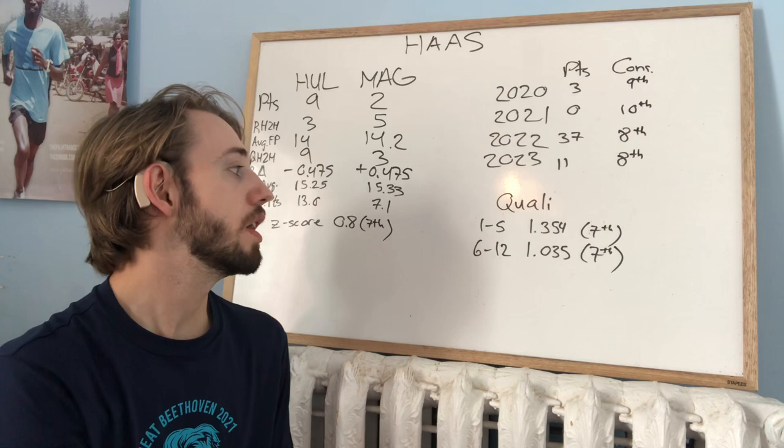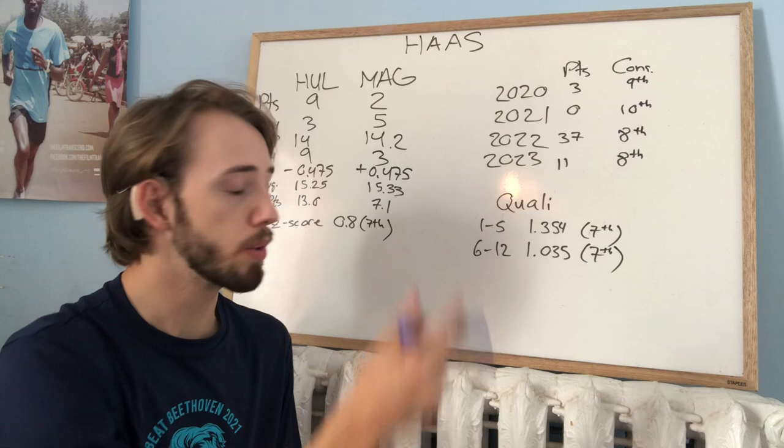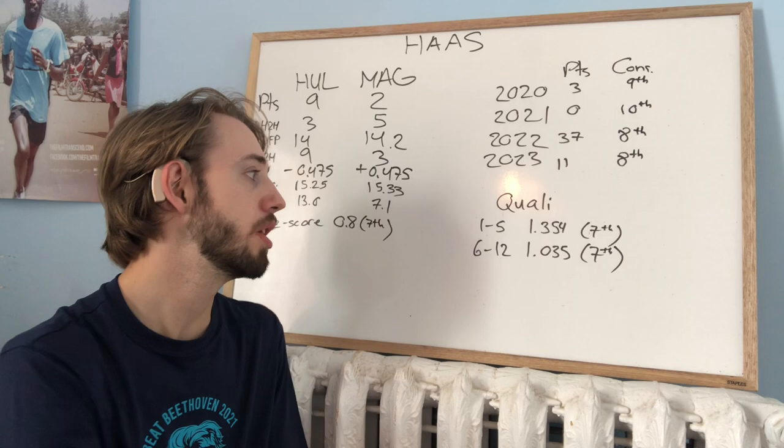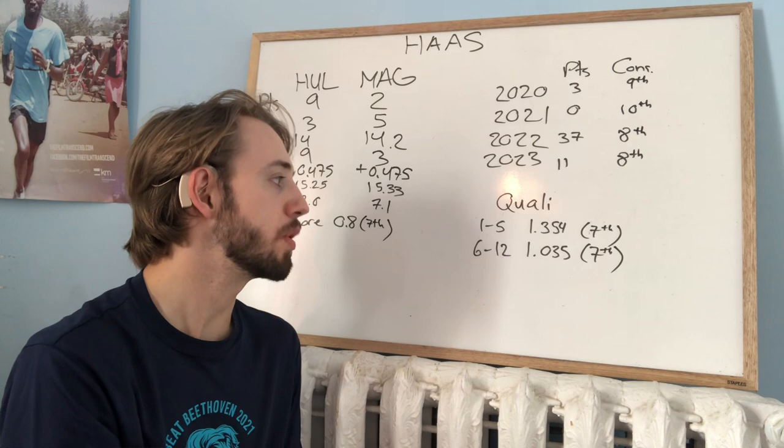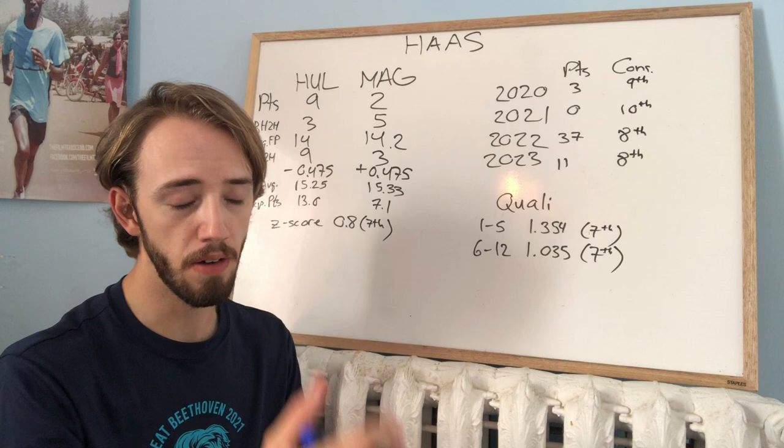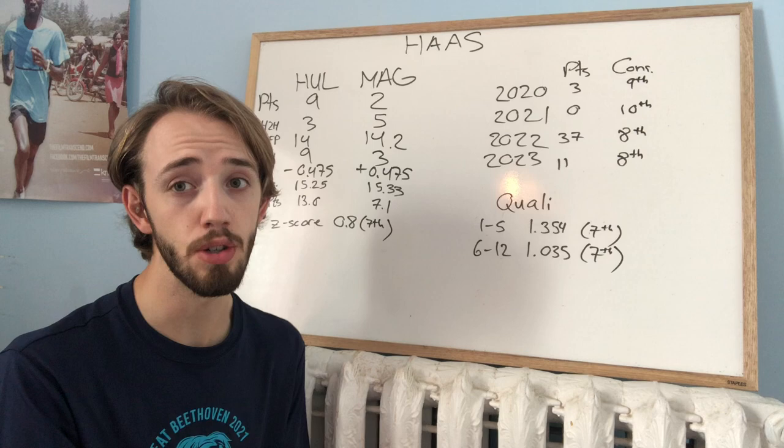Looking at qualifying through this year, first five races, they were on average 1.354 seconds off of pole. Their best time, the gap between their best time in qualifying and the pole position time, which ranks 7th. Through races 6 through 12, the gap's gone down to 1.035, which is still 7th. So they're basically at the top of that group of themselves, Alfa Romeo, Alpha Tauri, and Williams.